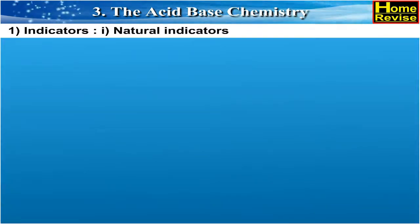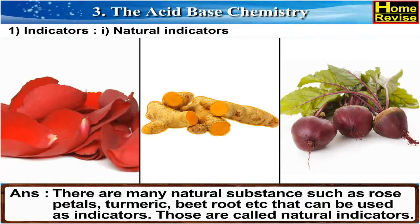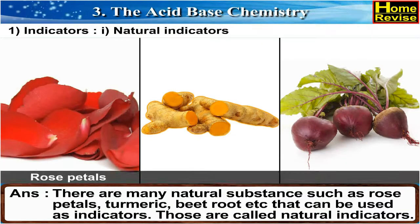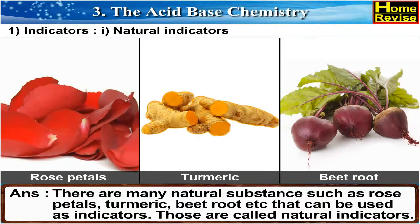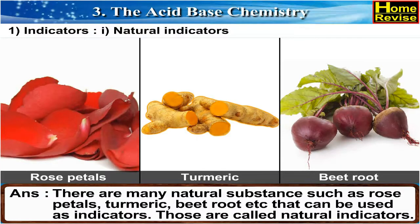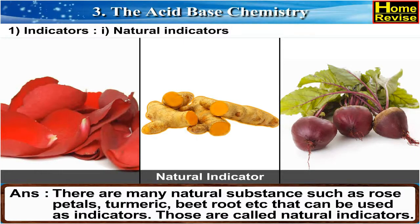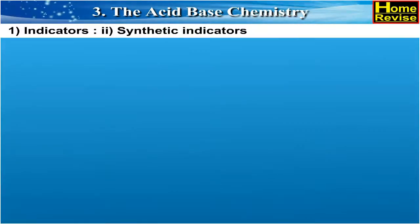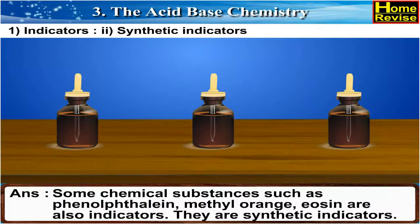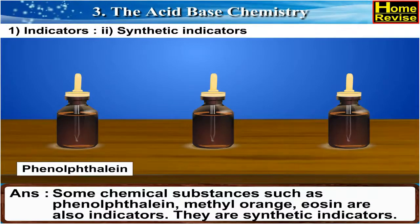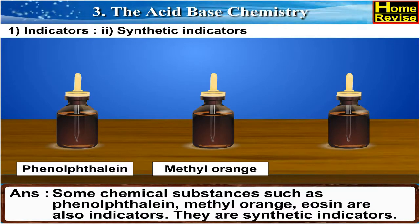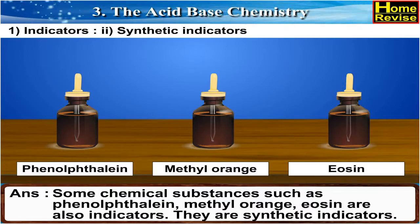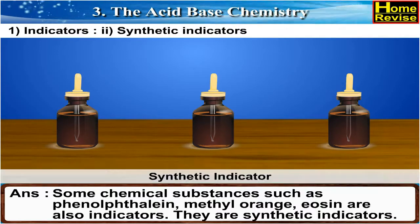Natural indicators: There are many natural substances such as rose petals, turmeric, beetroot, etc. that can be used as indicators. Those are called natural indicators. Synthetic indicators: Some chemical substances such as phenolphthalein, methyl orange, and eosin are also indicators. They are synthetic indicators.